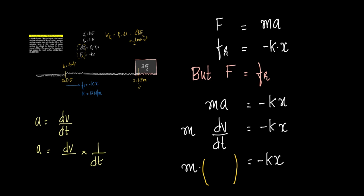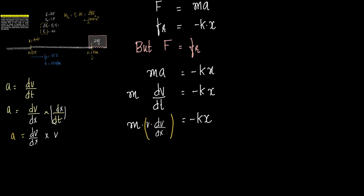And then right here dv by dx into dx by dt. Therefore, this a is equal to, so what is dx by dt? dx by dt is v and this becomes v into dv upon dx. And therefore, we can write this as minus kx.